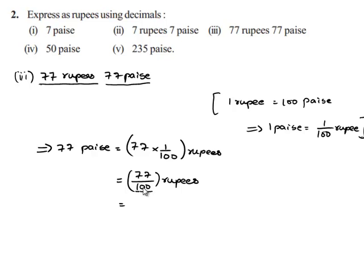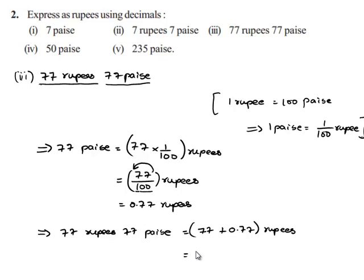Here, 1 is followed by 2 zeros in the denominator, so the decimal point moves 2 digits to the left, which gives 0.77 rupees. So 77 rupees and 77 paise, when expressed in terms of rupees, gives 77 plus 0.77 rupees. This is equal to 77.77 rupees.